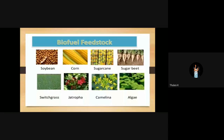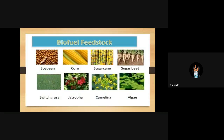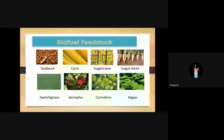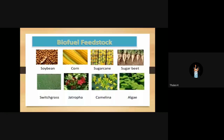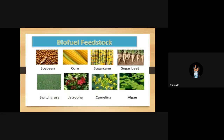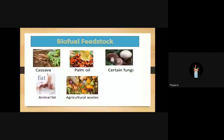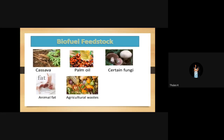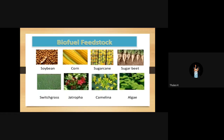Feedstock is the material from which biofuels are extracted. That material is called feedstock. Biofuel feedstocks are soya bean, corn, sugar cane, sugar beet, switchgrass, jatropha, camelina, algae, cassava, palm oil, certain fungi, animal fat, and agricultural waste. From these materials we can extract biofuels.